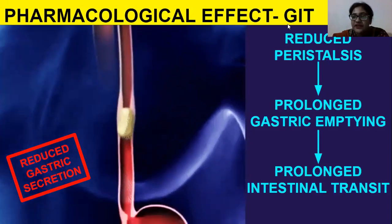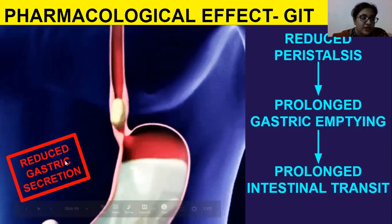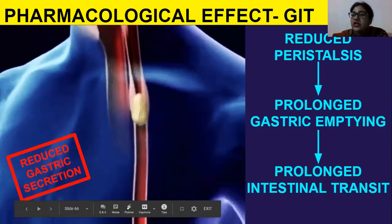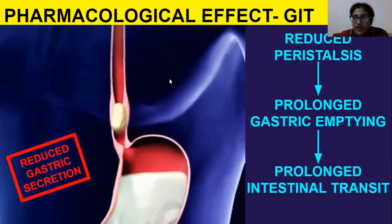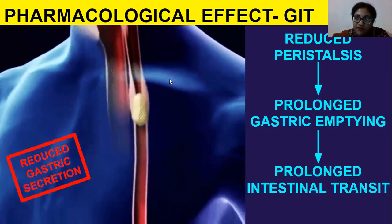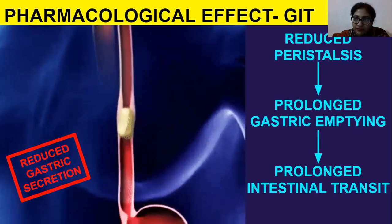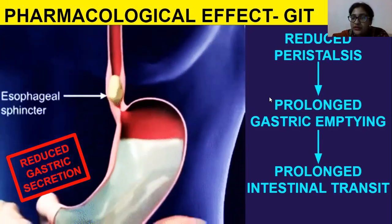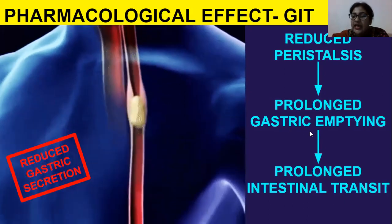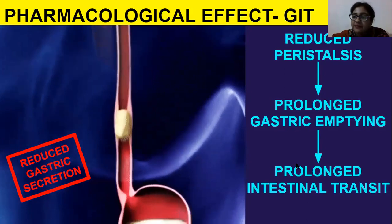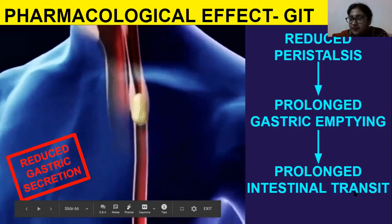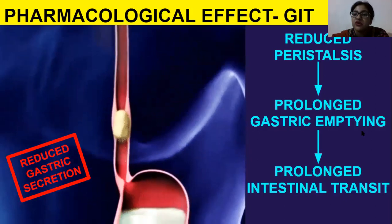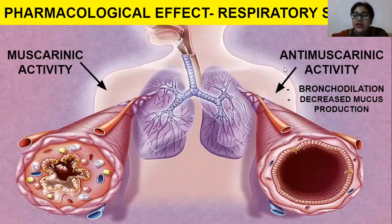Pharmacological effects on the GIT include reduced gastric secretion and reduced peristalsis, meaning the pushing of food forward is slowed down. Because of this, prolonged gastric emptying occurs, and since peristalsis also occurs in the intestine, prolonged intestinal transit results. In short, everything is prolonged.